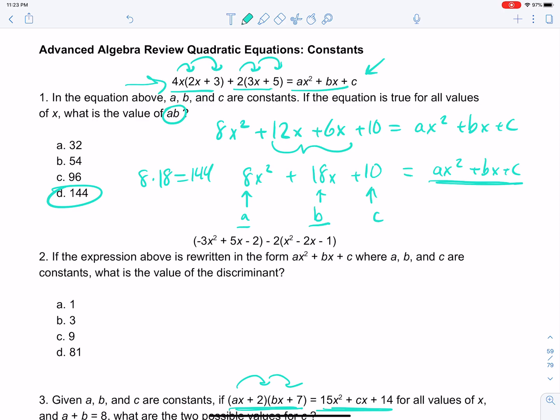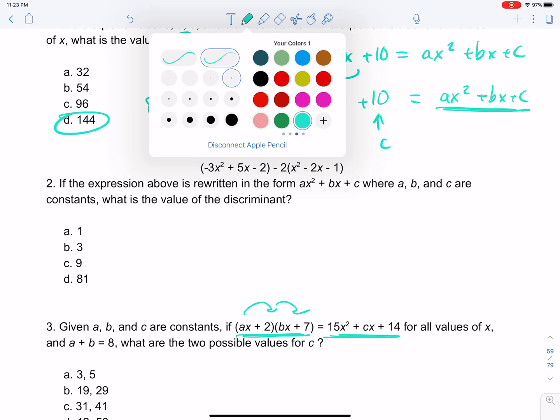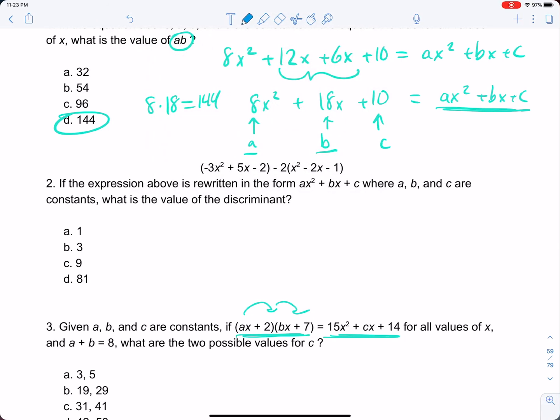So now let's increase the difficulty a little bit. This one gives us this expression. So we're going to do the same thing. Negative 3x² plus 5x minus 2. And then let's distribute.